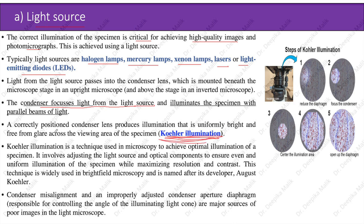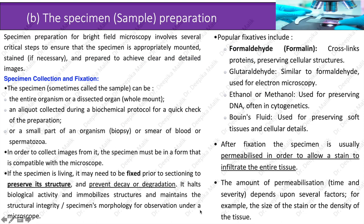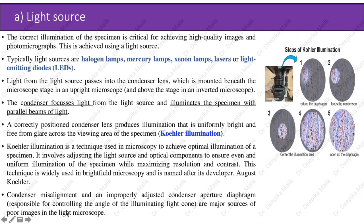Köhler illumination is a technique used in microscopy to achieve optimal illumination of a specimen. It involves adjusting the light source and optical components to ensure even and uniform illumination while maximizing resolution and contrast. This technique is widely used in bright field microscopy and is named after its developer August Köhler. Condenser misalignment and an improperly adjusted condenser aperture diaphragm — responsible for controlling the angle of the illuminating light cone — are major sources of poor images in the light microscope.